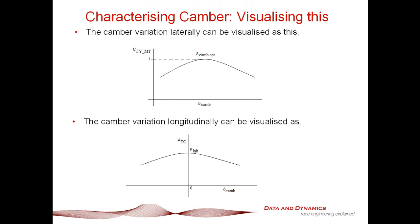In terms of what that looks like graphically: the first plot represents the camber variation. We've got our delta camber optimum where CFYMT equals 1, plotted against delta camber horizontally — and you can see this is our delta camber optimum. The bigger SFCY is, the more pronounced that curve is going to be. In terms of the longitudinal variation, we've got our optimum at mu-init at 0 degrees, and our curvature SFCX dictates how pronounced that curve becomes.